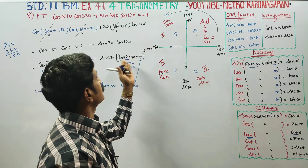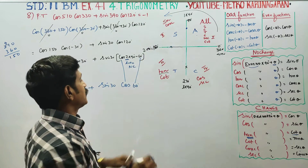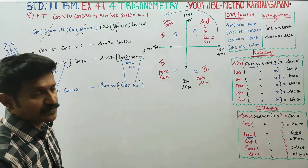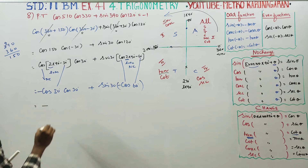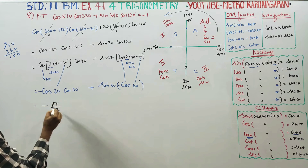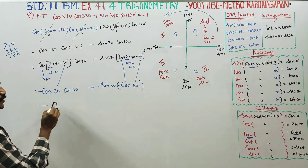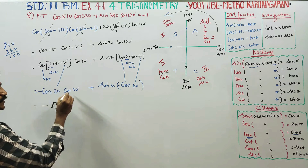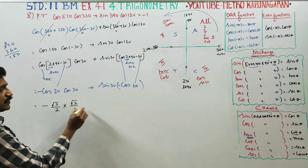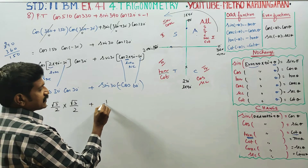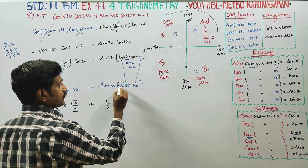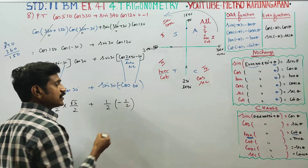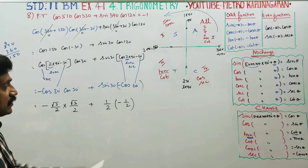Now cos 30 is minus root 3 by 2. Cos 30 is root 3 by 2. Sine 30 is 1 by 2. Minus of cos 60 — cos 60 is 1 by 2 and sine 30 is 1 by 2.